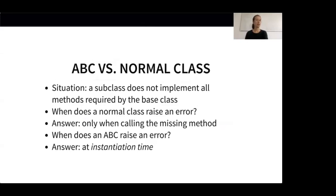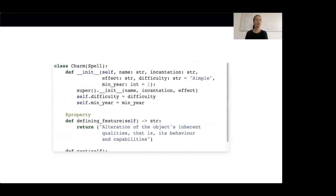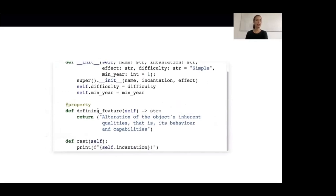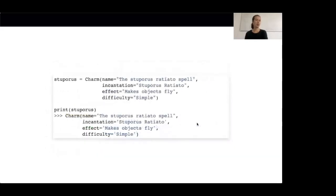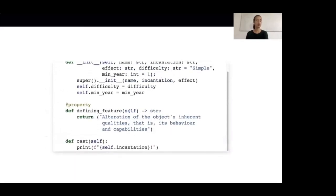A proper implementation of the Charm class would look as follows. In this implementation, we have implemented both abstract methods — the defining_feature method and the cast method. We should now be able to instantiate the Charm class, and it works just as expected. Note that ABCs only check for the presence of methods, not if they are properly implemented. So when you notice that you're not implementing abstract methods properly in several of your child classes, this is a sign that the method should maybe not be an abstract method.